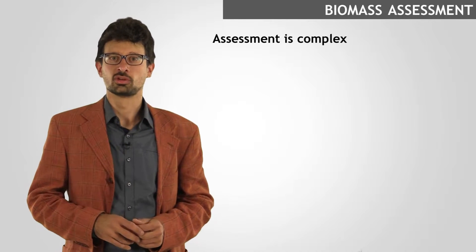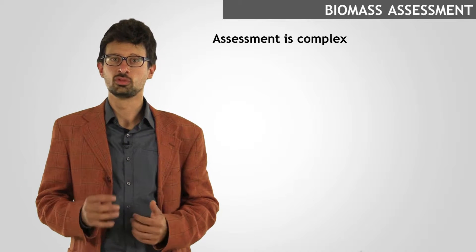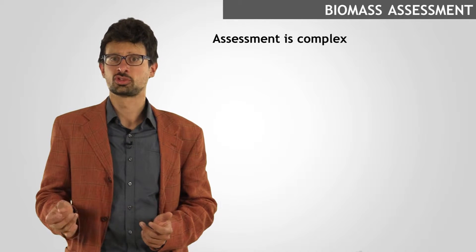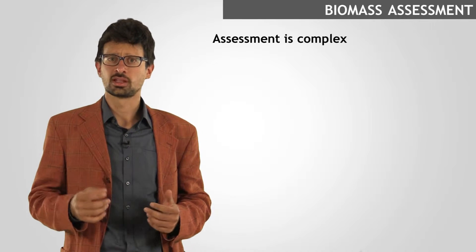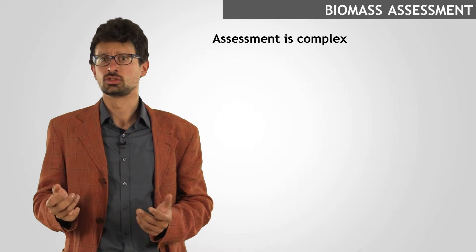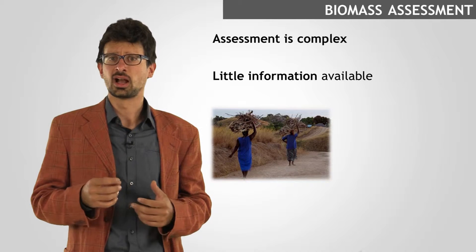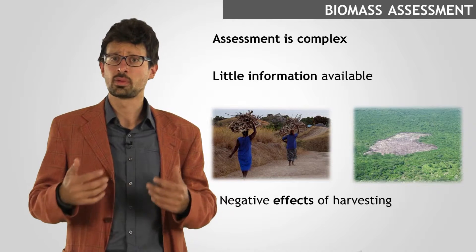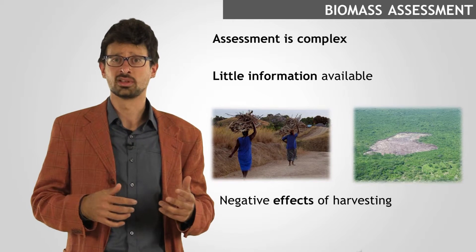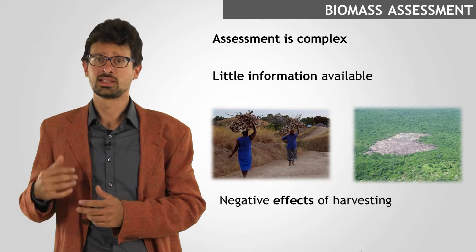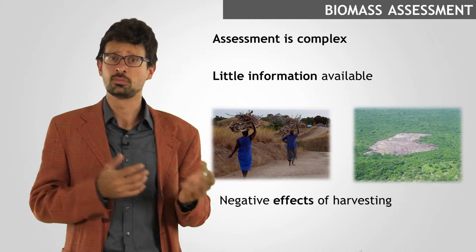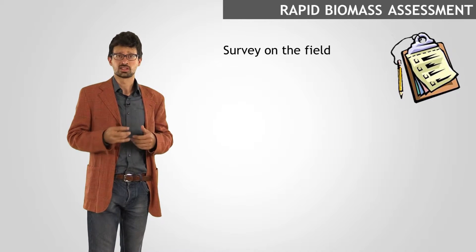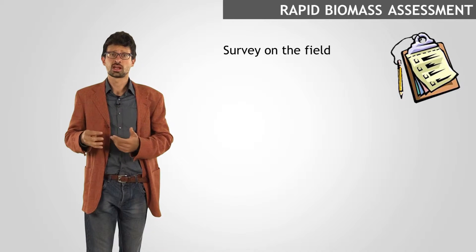When talking about food preparation and in particular cooking in refugee camps or internally displaced person settlements, biomass is of course the most common source of energy. An accurate assessment of biomass resources is a complex issue. In general, no detailed data are available for specific sites. On the other hand, to understand the maximum amount of biomass that it is possible to harvest in order to avoid negative effects on the woodland, like the case in the picture, is mandatory in most cases. A good compromise for the assessment of biomass can be achieved through a survey on the field.